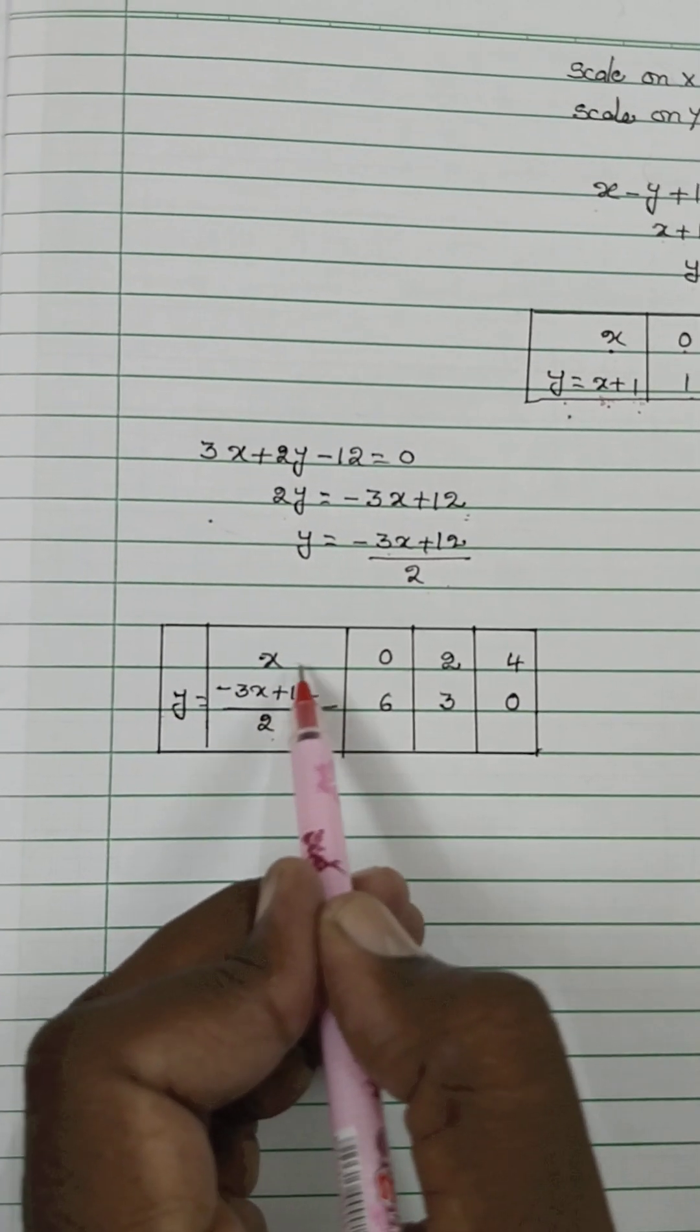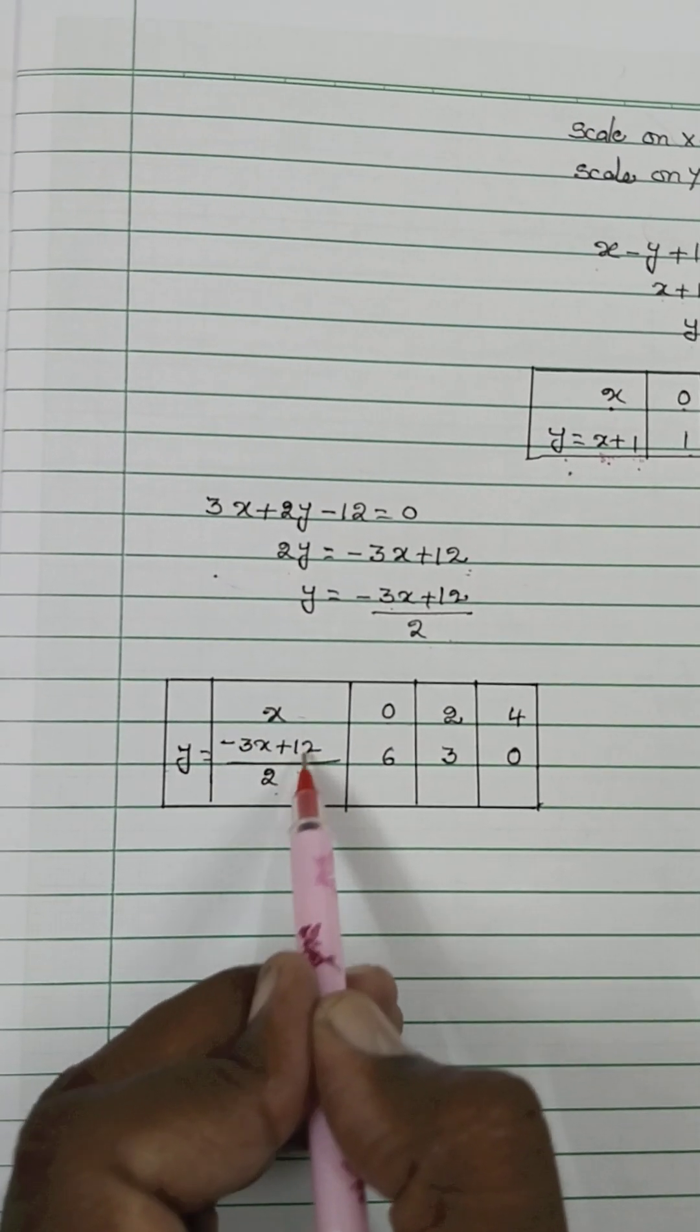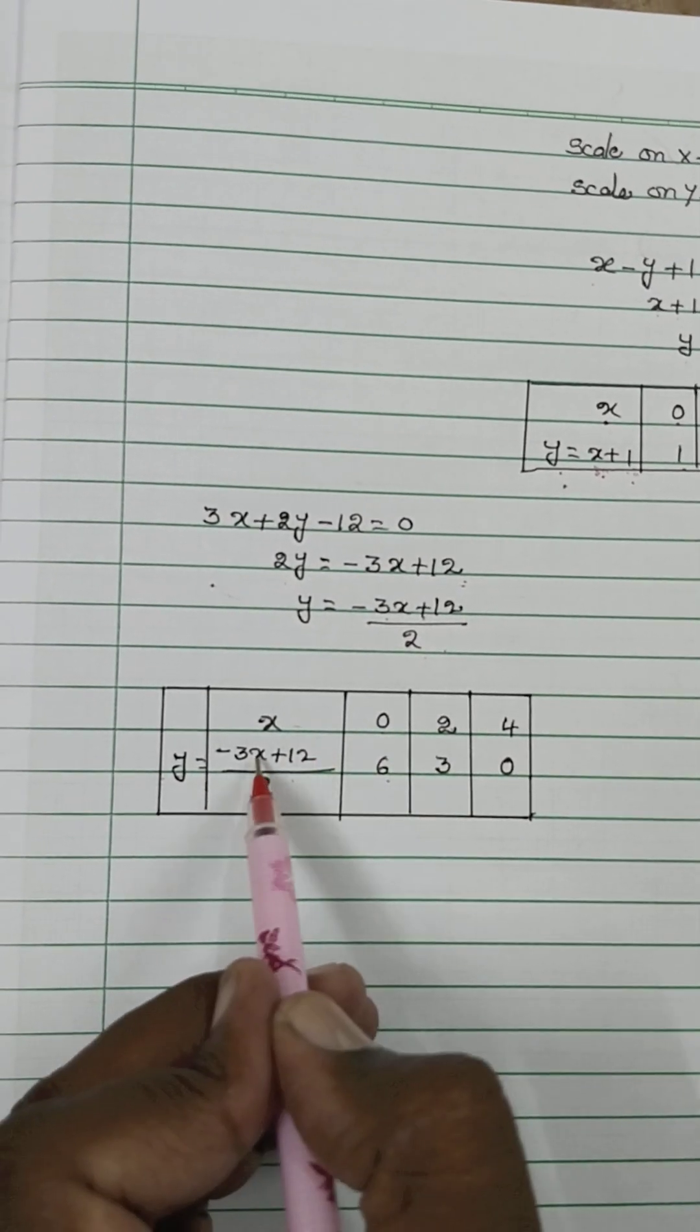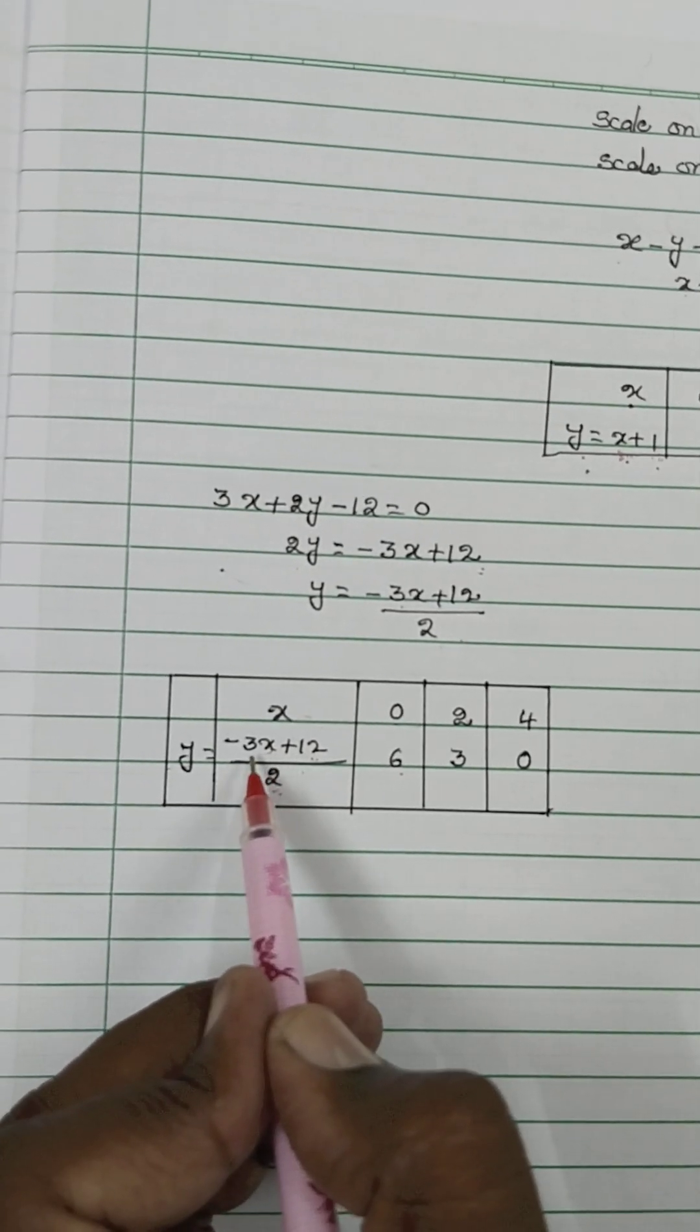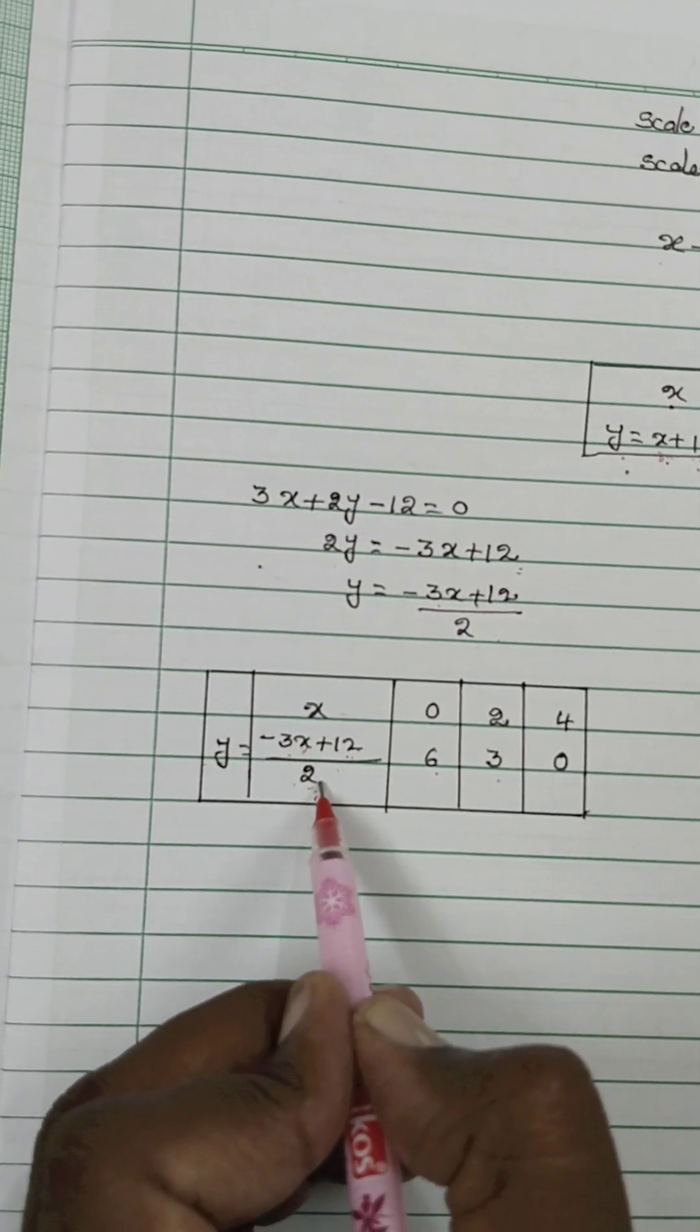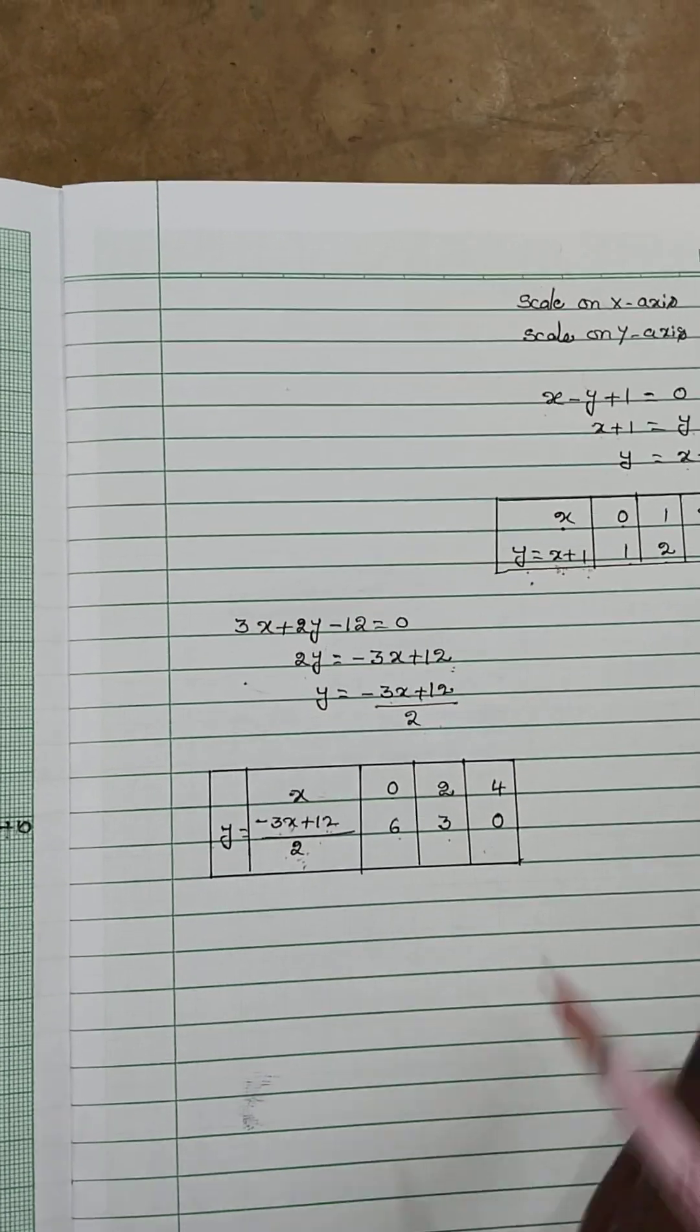This is x and this is y. x is equal to 0, 3 into 0 is 0, 12 by 2, 6. Next you put 2, minus 6 plus 12 is 6. So 12 minus 6 is equal to 6, 6 by 2 is equal to 3. Then you substitute 4, 4 threes are 12. Minus 12 plus 12 goes to 0. Next you are going to draw the graph.